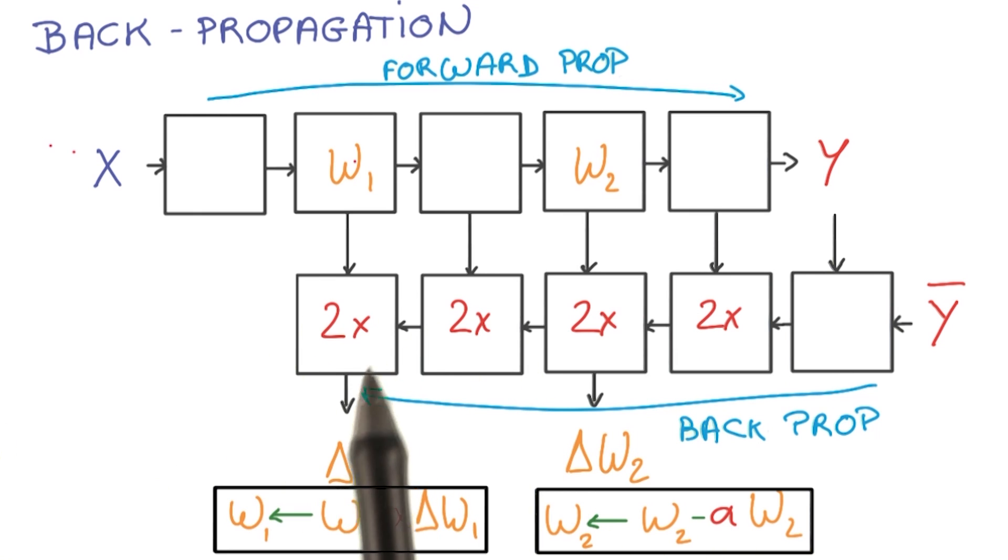But keep in mind this diagram. In particular, each block of the backprop often takes about twice the memory that's needed for the forward prop, and twice the compute. That's important when you want to size your model and fit it in memory, for example.